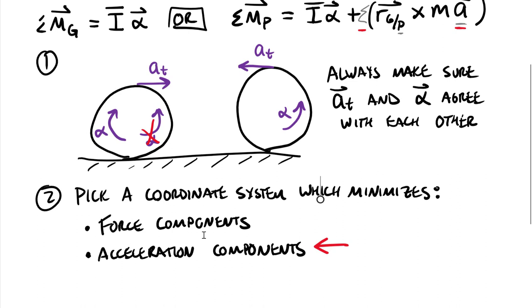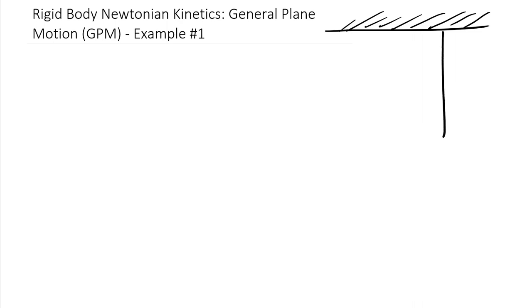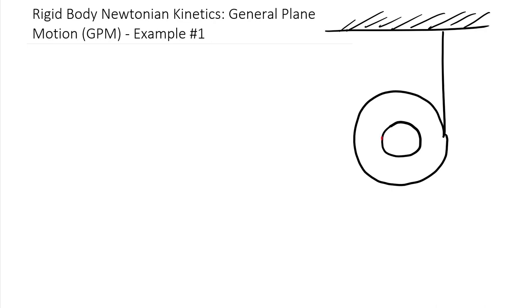That's the fundamental notes on this topic. Let's jump into the first example. We have a spool suspended by a cord from a fixed non-moving point — analogous to a yo-yo. There's an additional cable pulling upward with 70 newtons. The spool has an inner diameter of 0.2 meters and an outer diameter of 0.5 meters.